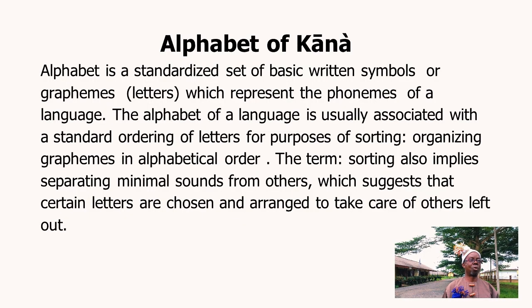Let us look at what is called alphabet. Alphabet can be seen as a standardized set of basic written symbols or letters or graphemes which represent the phonemes of a language. The alphabet of a language is usually associated with standard ordering of the letters for the purpose of sorting, that is to say organizing the graphemes in alphabetical order. A letter is an indivisible grapheme, a contrastive unity in a language system.